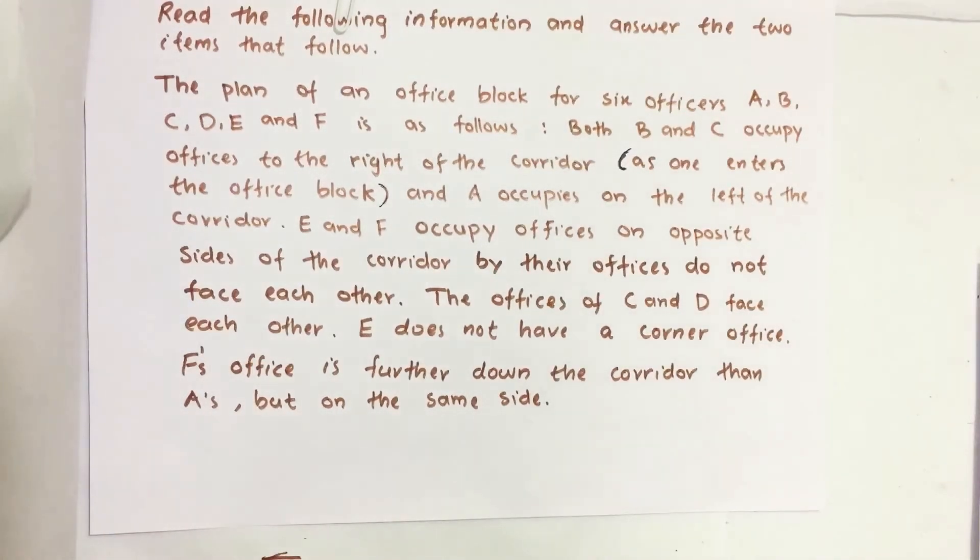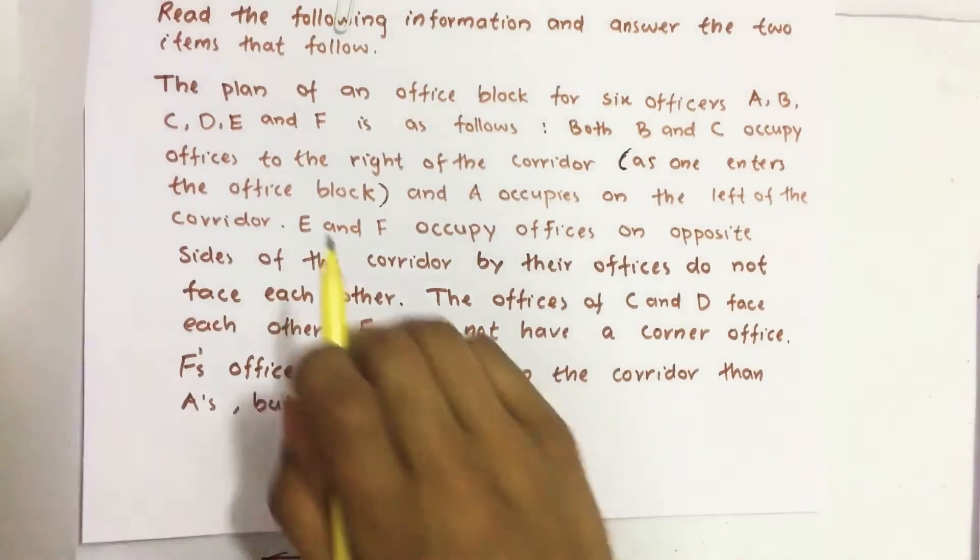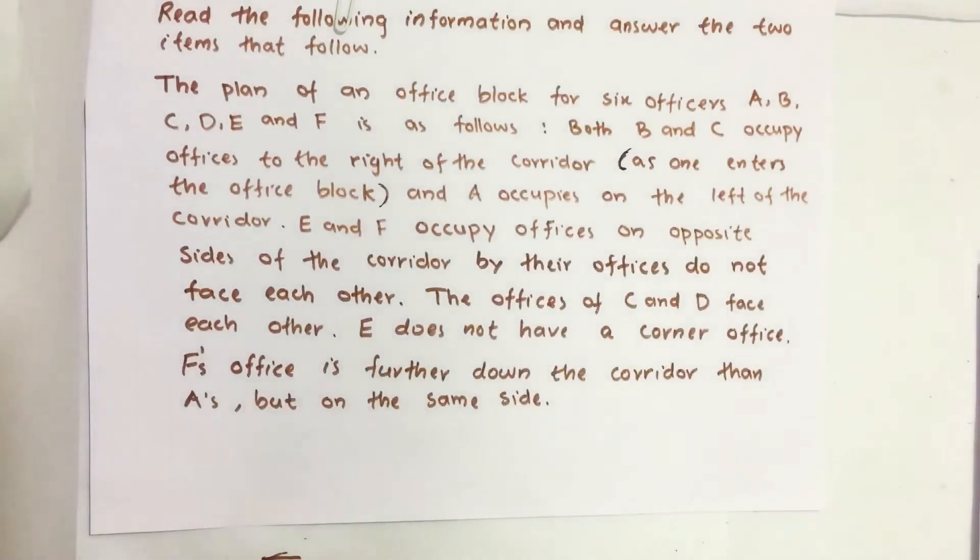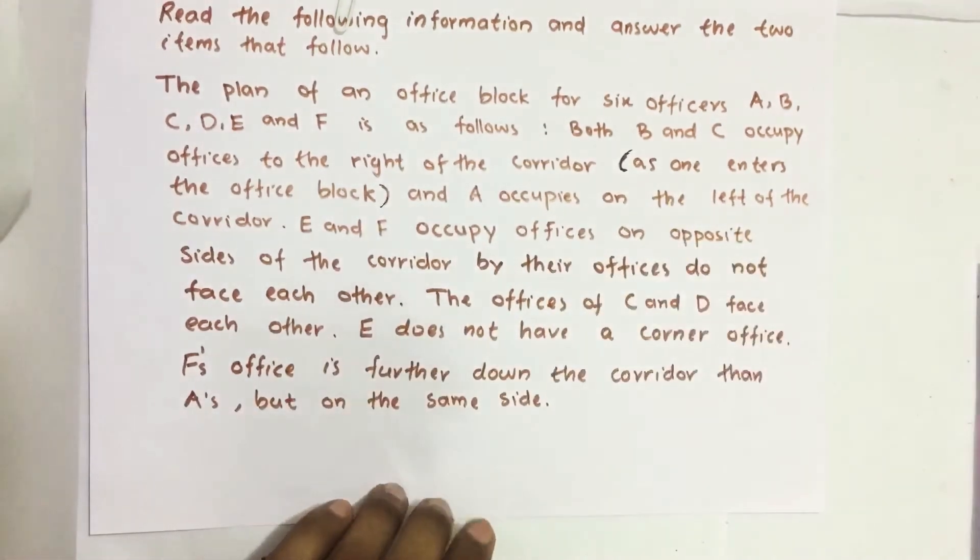Hello everyone. Here I am going to solve 2018 CSAT question number 25 and 26 from question paper series A. Here we have a plan for an office block. Based on this plan we have two questions.